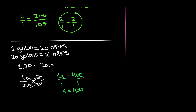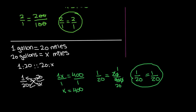To check our answer, we replace X with 400: 1 over 20 equals 20 over 400. Simplifying 20 over 400 — the zero cancels giving 2 over 40, then dividing by 2 gives 1 over 20. So 1 over 20 equals 1 over 20, and our answer is correct. That means if you're traveling 20 miles per gallon, you will travel 400 miles on 20 gallons of gas.